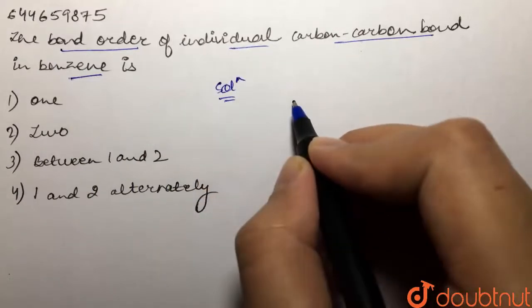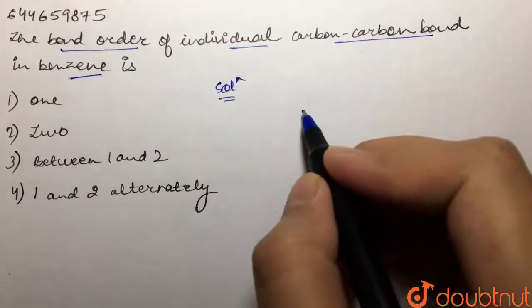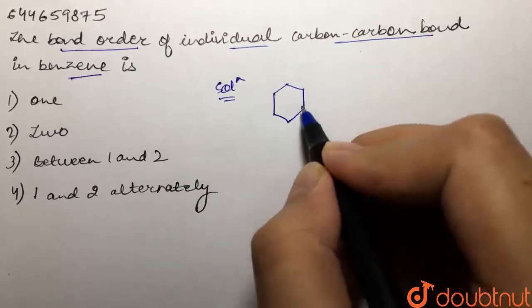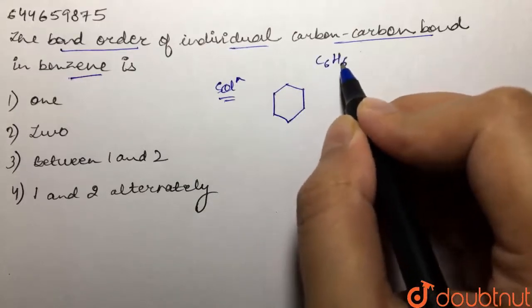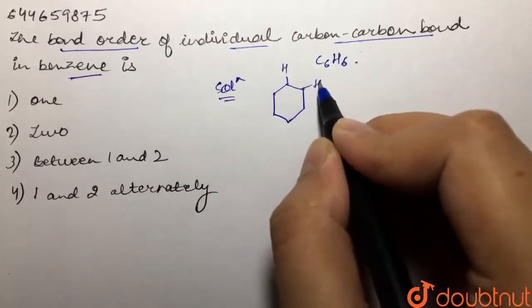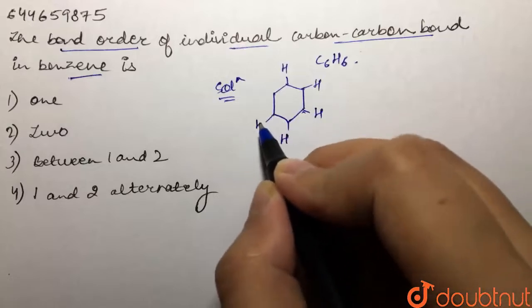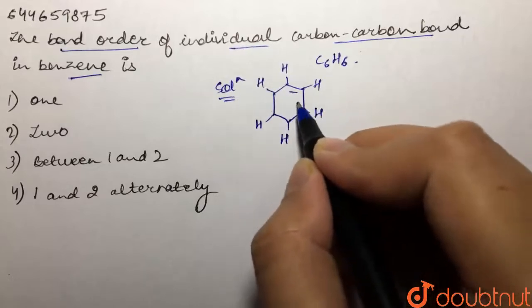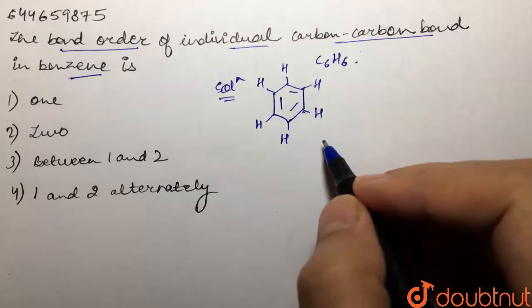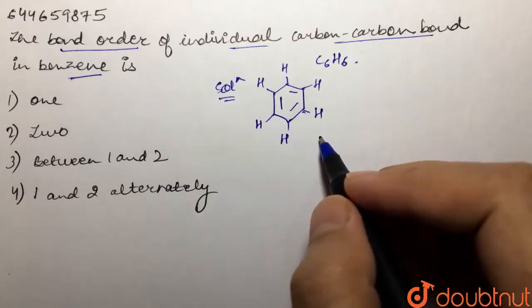We are supposed to tell the bond order between the carbon-carbon bond in benzene. Now, what is benzene? Benzene has the formula C6H6. We have hydrogens attached to each of the carbons, and there is presence of three double bonds in it. This is our benzene.